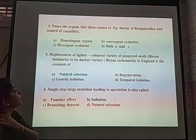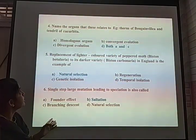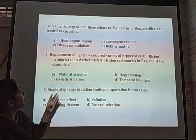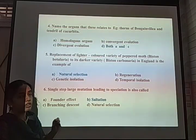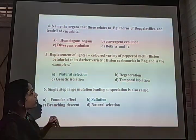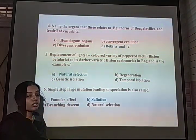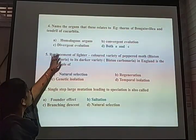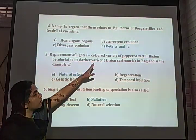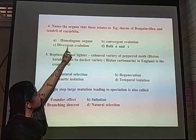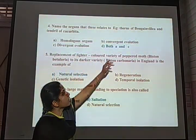Next MCQ: What is the name for the type of organs exemplified by the thorns of Bougainvillea and the tendrils of Cucurbita? Both have the same origin but perform different functions, making them homologous organs showing divergent evolution. The options are homologous organs, convergent evolution, divergent evolution, and both A and C. The answer is D — both A and C, as they are homologous organs showing divergent evolution.